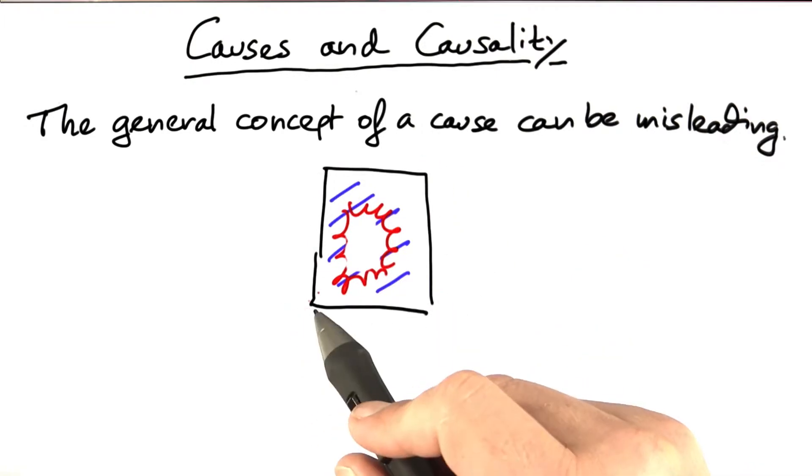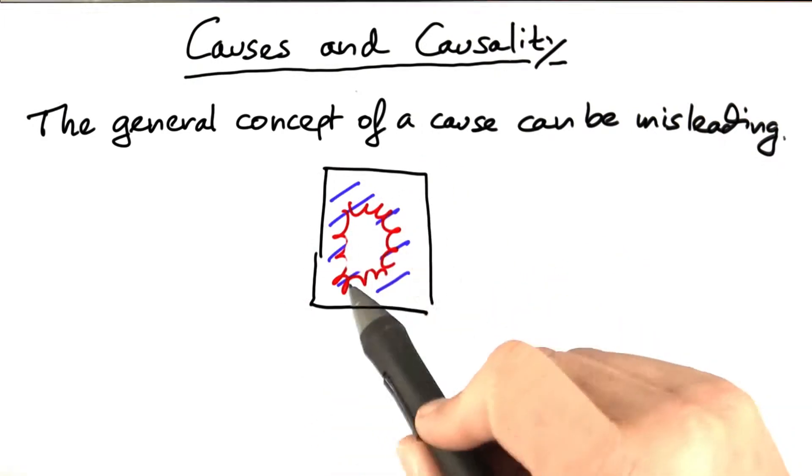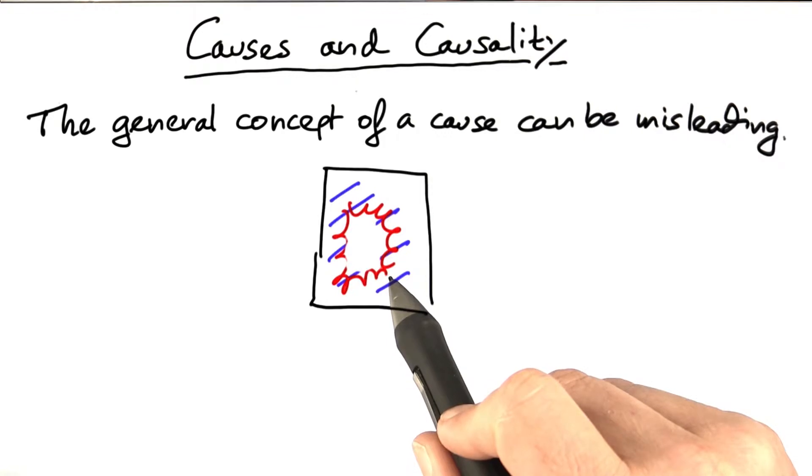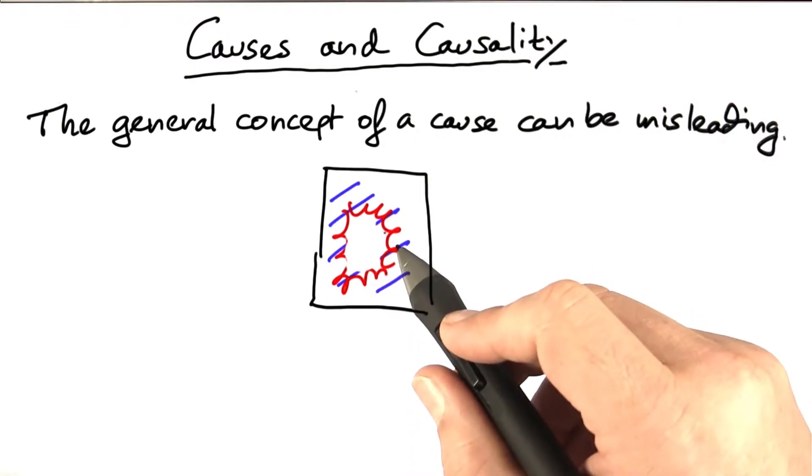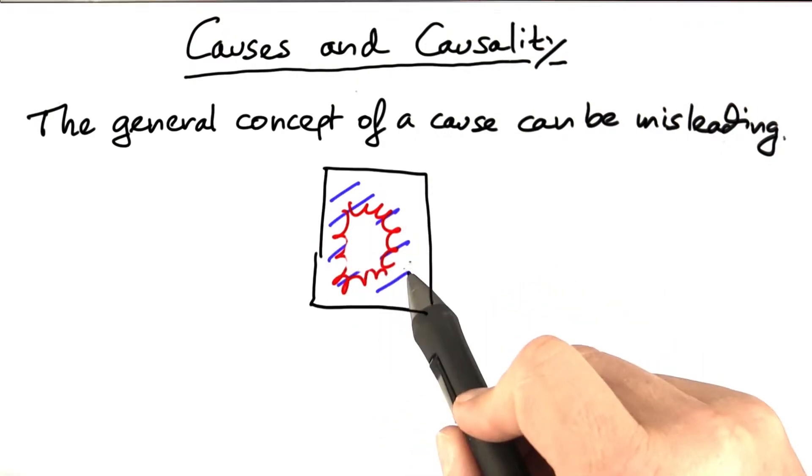See, if the window maker had not made this particular window, then the window would not have shattered. And if the house builder had not built this particular house with a window in it, well, the window wouldn't have shattered either.